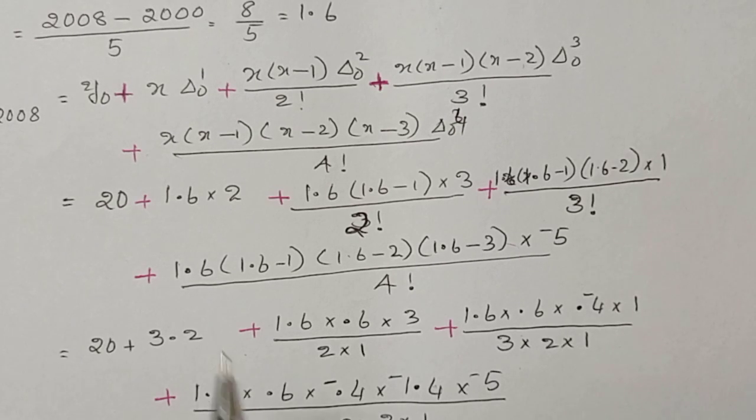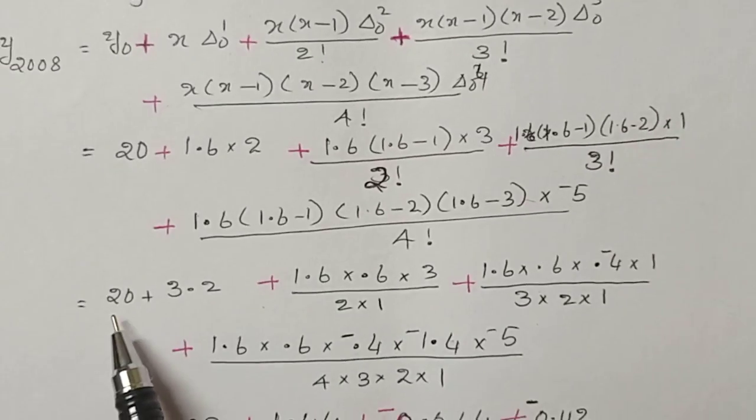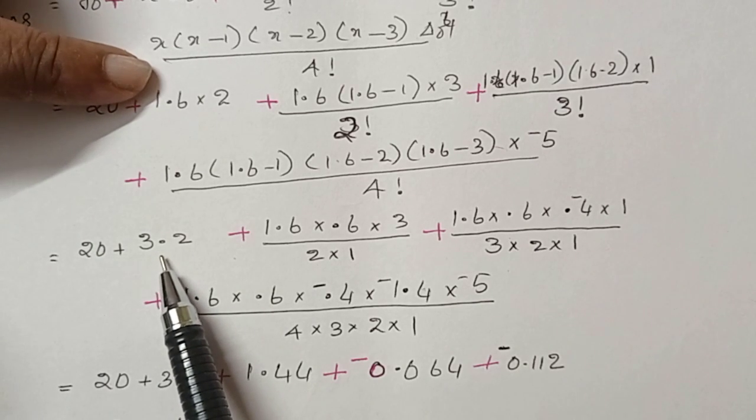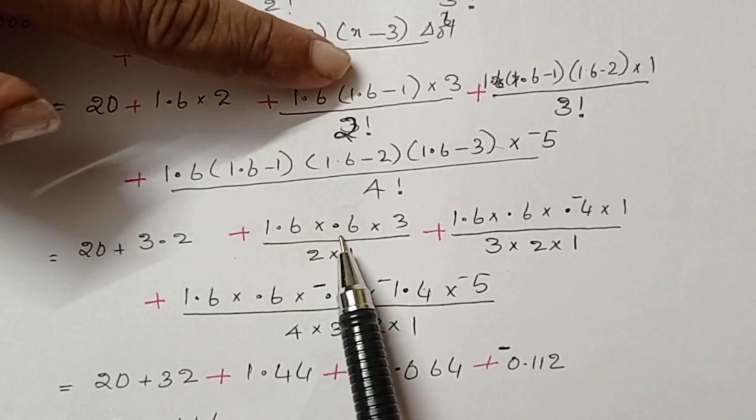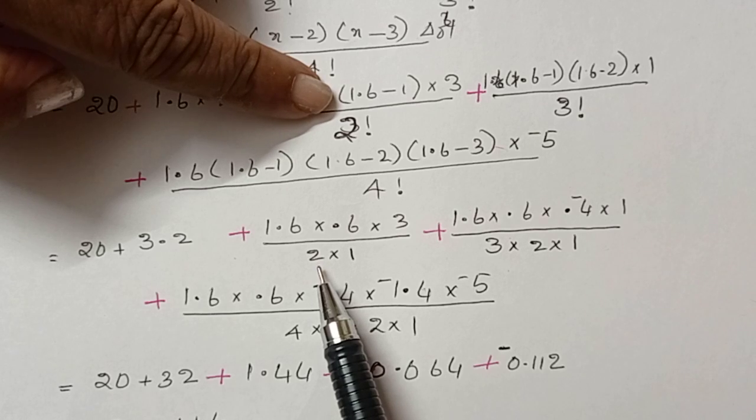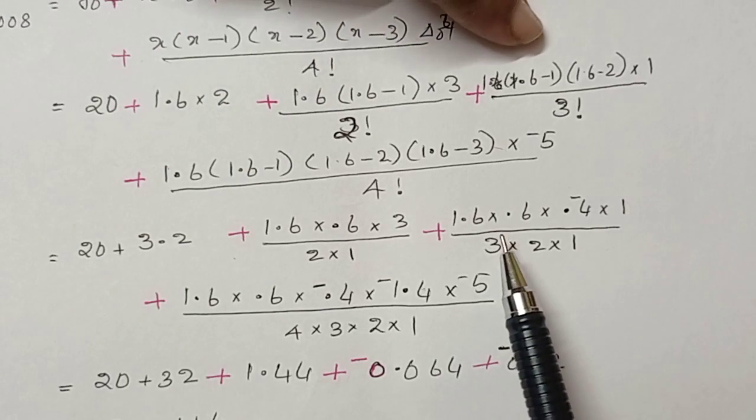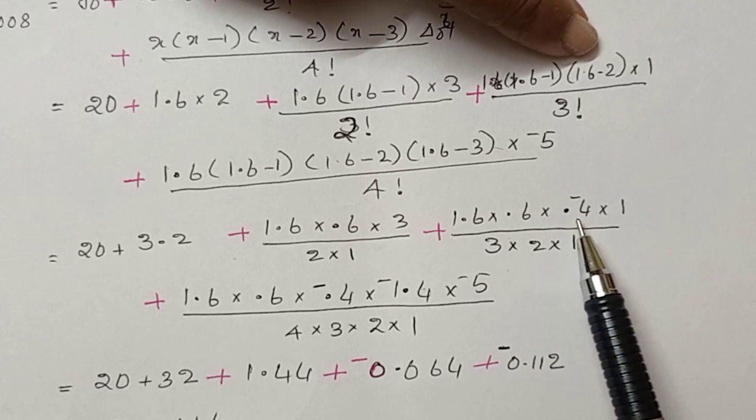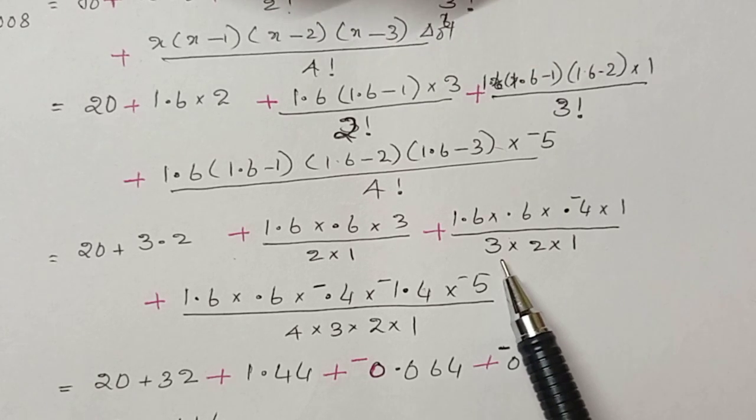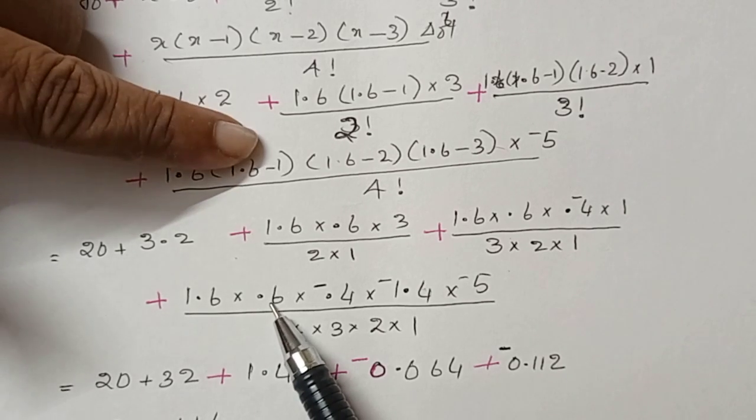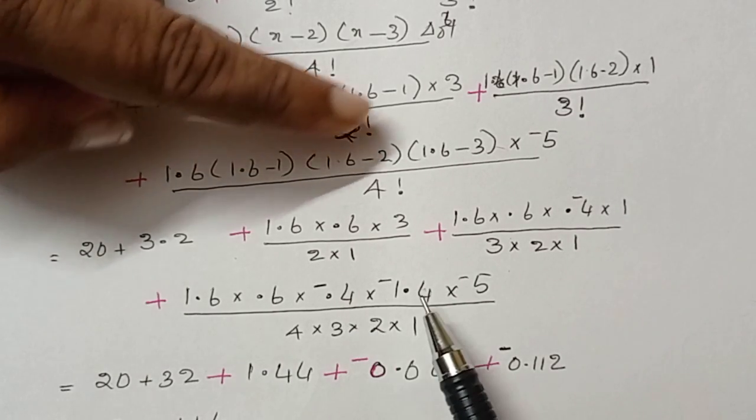Now, we are substituting each value in this equation. We are solving 20 plus 1.6 into 2, 3.2 plus 1.6 into 0.6 into 3, divided by 2 into 1, that is 2 factorial, plus 1.6 into 0.6 into minus 0.4 into 1, divided by 3 factorial, 3 into 2 into 1.